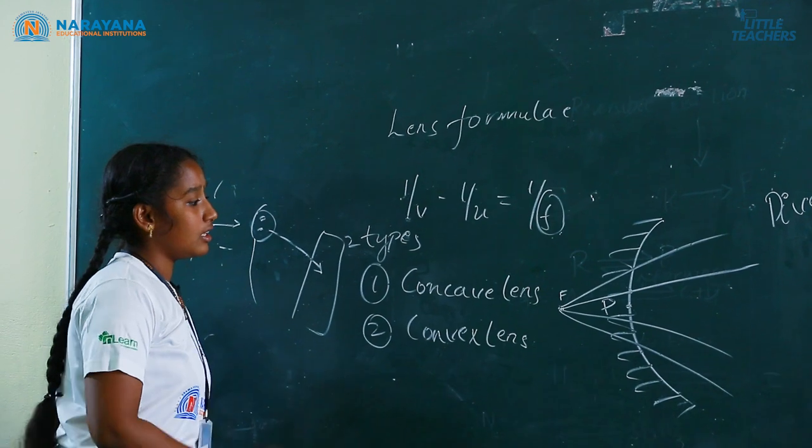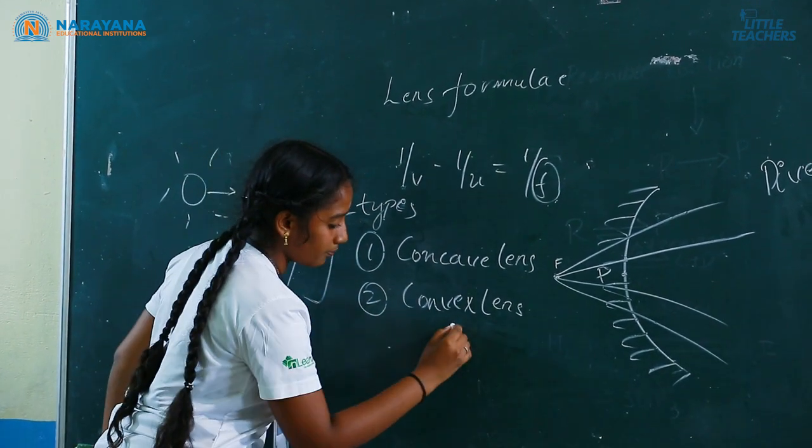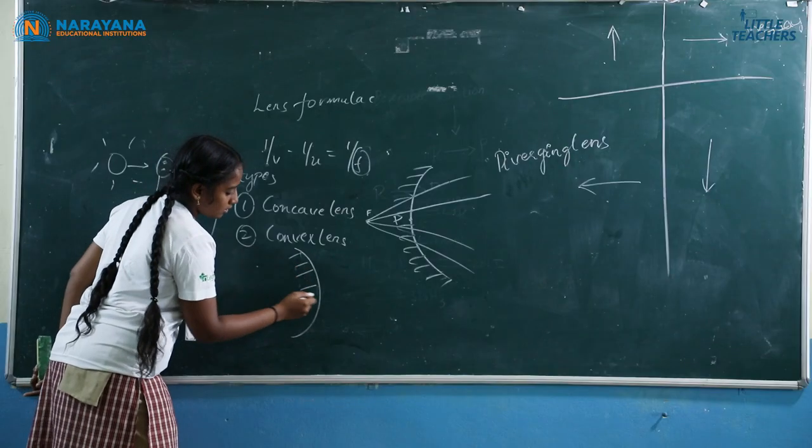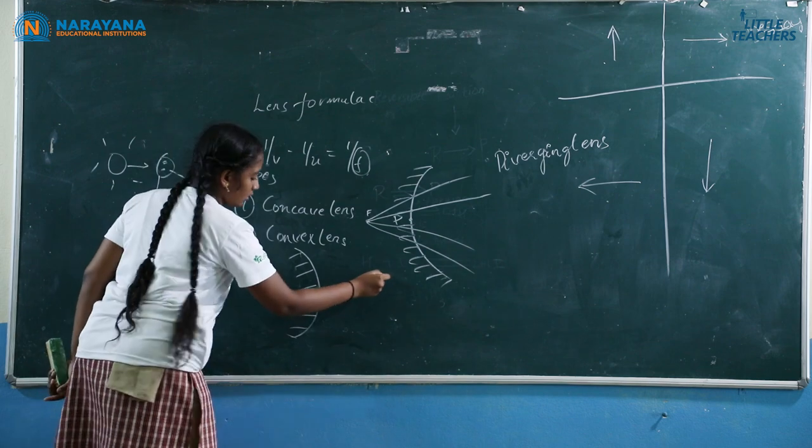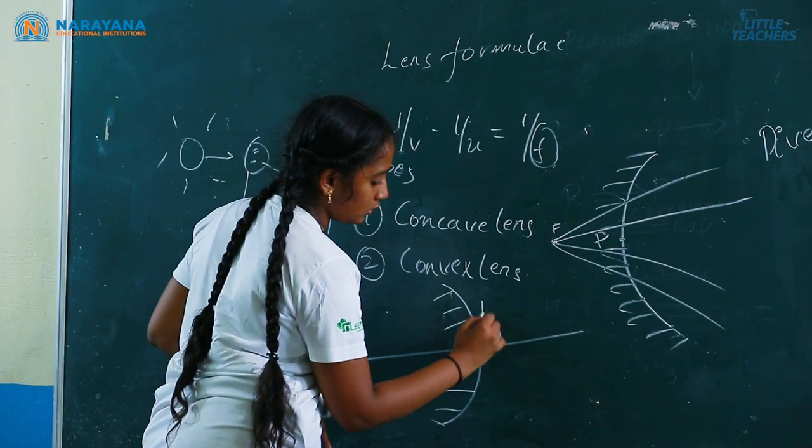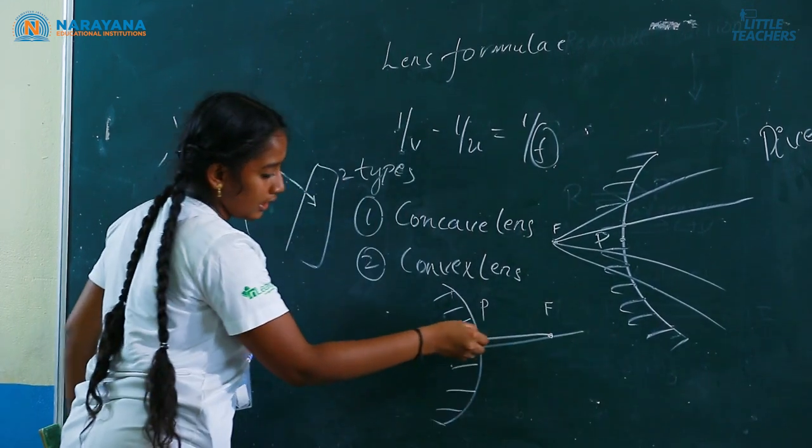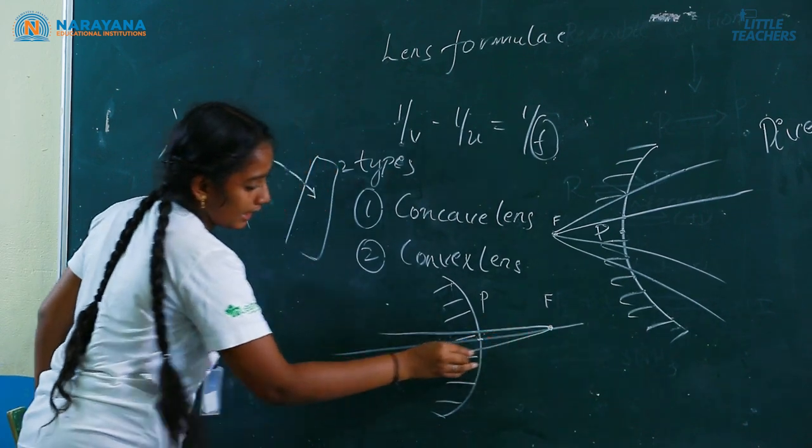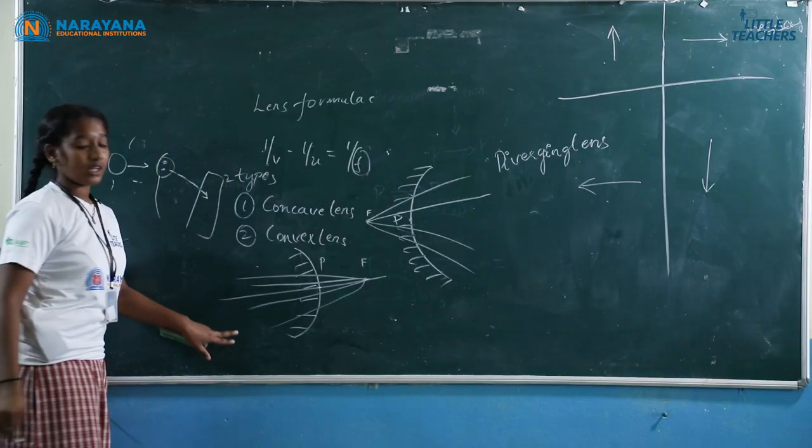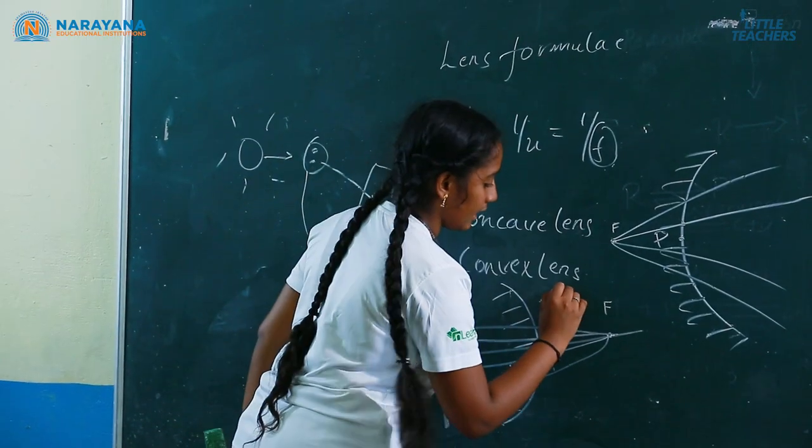And here the convex lens, the reflection is like this. This is known as the pole. From here this is known as F. Here it will not diverge, it will be converged. From this one we can conclude that this is a converging lens.